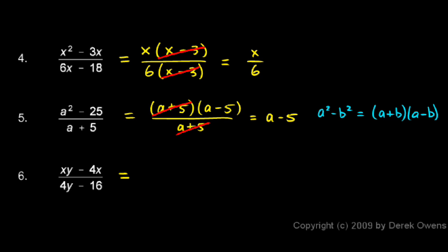And number 6. We'll factor the numerator. We have xy minus 4x. We can take an x out of each of those. And that leaves y minus 4. And 4y minus 16. We can take a 4 out of each of these. So I'll put a 4 out here. And that leaves me with y minus 4. And you can see the y minus 4 factor cancels on the top and bottom, leaving us with x over 4 for our answer.